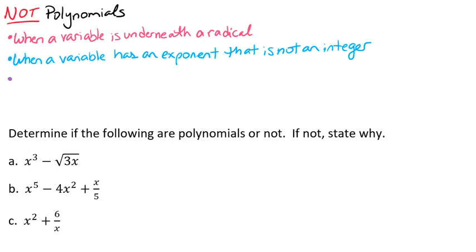and when a variable is in the denominator, which also means that if a variable has a negative exponent, it is also not a polynomial.